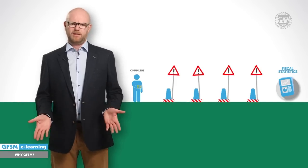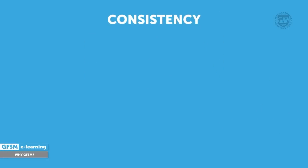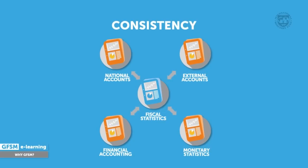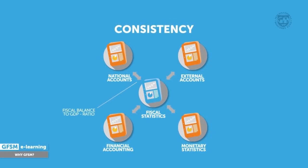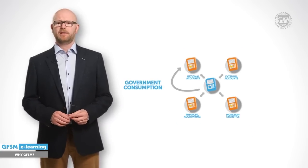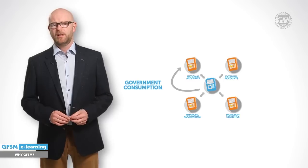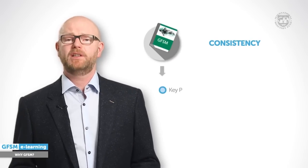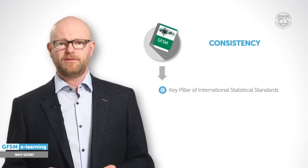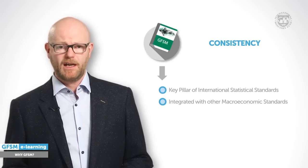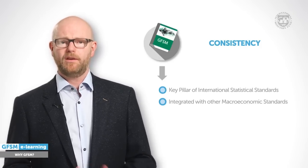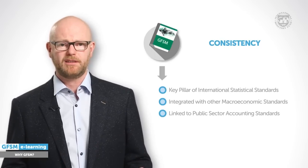And finally, the challenge of consistency. Government finance statistics is not a world of its own — it is directly related to other macroeconomic statistics and even financial accounting. Often data from two or more sources are combined for analytical purposes, just think of the fiscal balance as a percent of GDP. There are also direct data links: government consumption is a main input for GDP calculation in the national accounts, and government debt data is linked to the external accounts and monetary statistics. Consistent definitions and concepts make comparisons meaningful and sound. GFSM forms a key pillar within the architecture of international economic statistical standards and is fully integrated with other major standards, such as the System of National Accounts, the Balance of Payments and International Investment Position Manual, and the Monetary and Financial Statistics Manual. Furthermore, one of the strengths of the GFSM is that it is broadly linked with the International Public Sector Accounting Standards and its concepts.